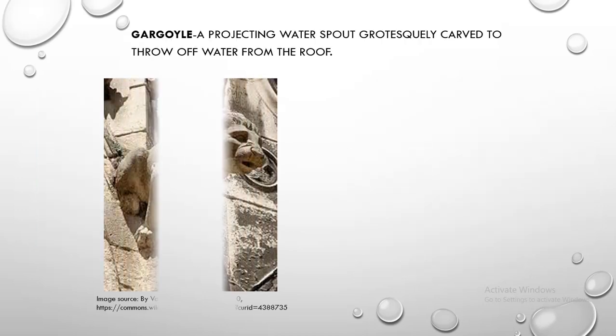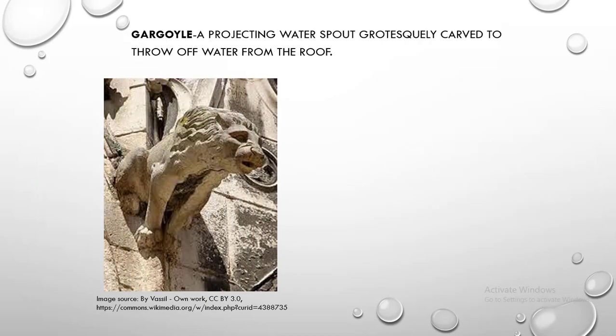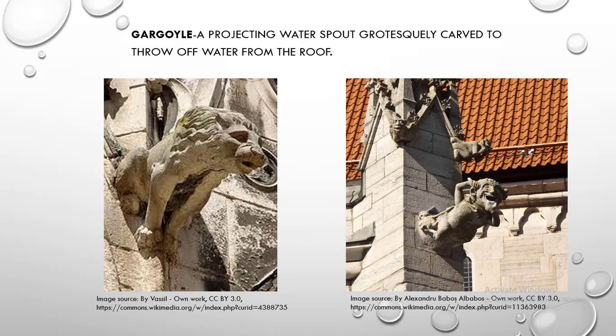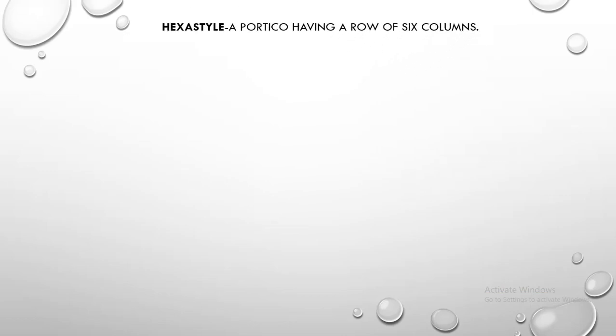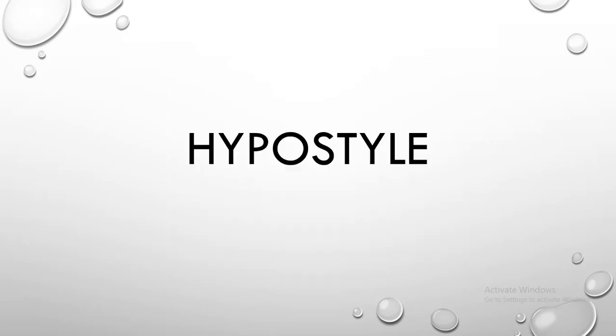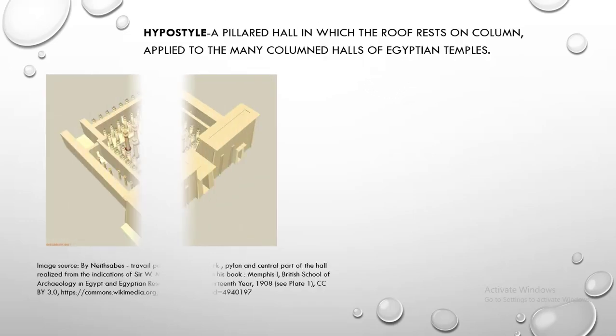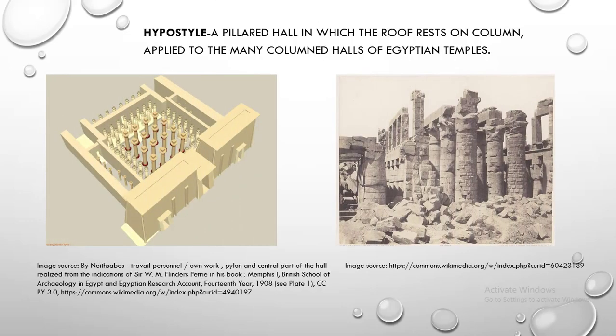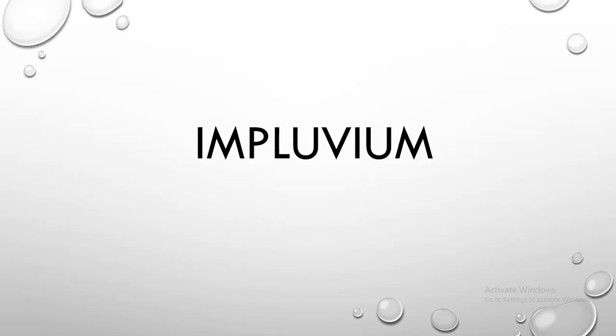Gargoyle. Gargoyle is a projecting water spout grotesquely carved to throw off water from the roof. Hexastyle. Hexastyle is a portico having a row of six columns. Hypostyle. Hypostyle is a pillared hall in which the roof rests on columns, applied to the many-columned halls of Egyptian temples.